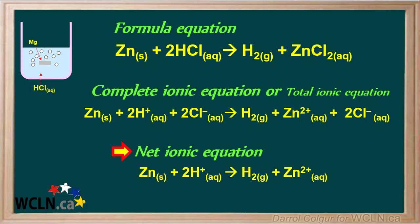The net ionic equation shows only the species that are actually reacting. This includes individual aqueous ions, solids, gases, and any liquids if they are present. It does not include spectator ions.